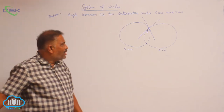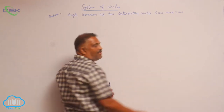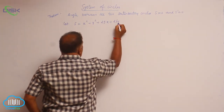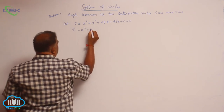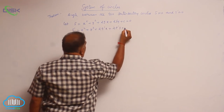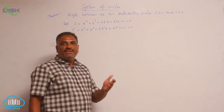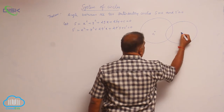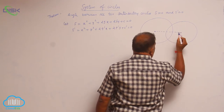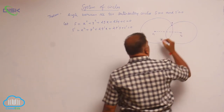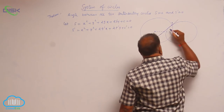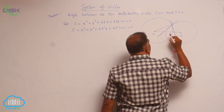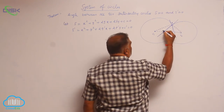Let us draw one more figure for calculating exactly the angle between the two circles. Let S = x² + y² + 2gx + 2fy + c' = 0. Since these two are intersecting circles, let us draw the circles. This is center c1 and this is center c2. Draw the line of centers, and this is point P. From P, draw a tangent to the first circle and one more tangent to the second circle. Join c1 to P and c2 to P. Assume this tangent foot is M and this one is N.